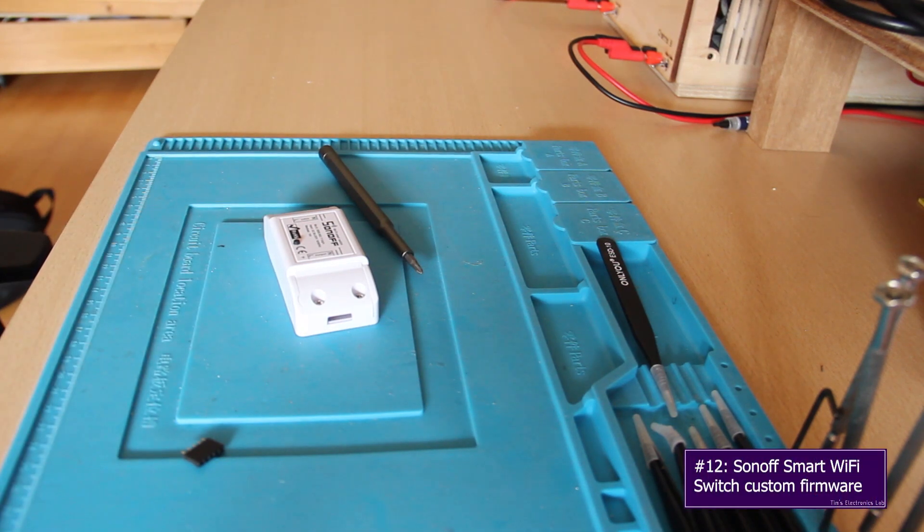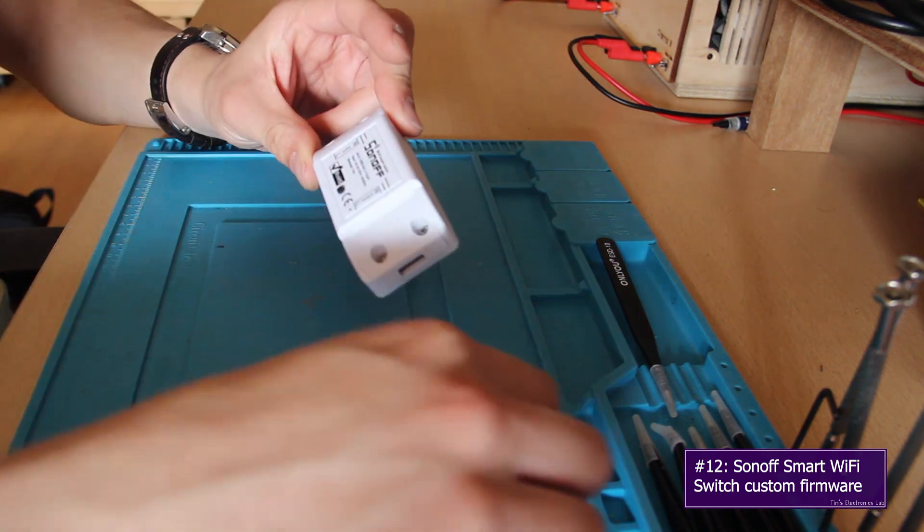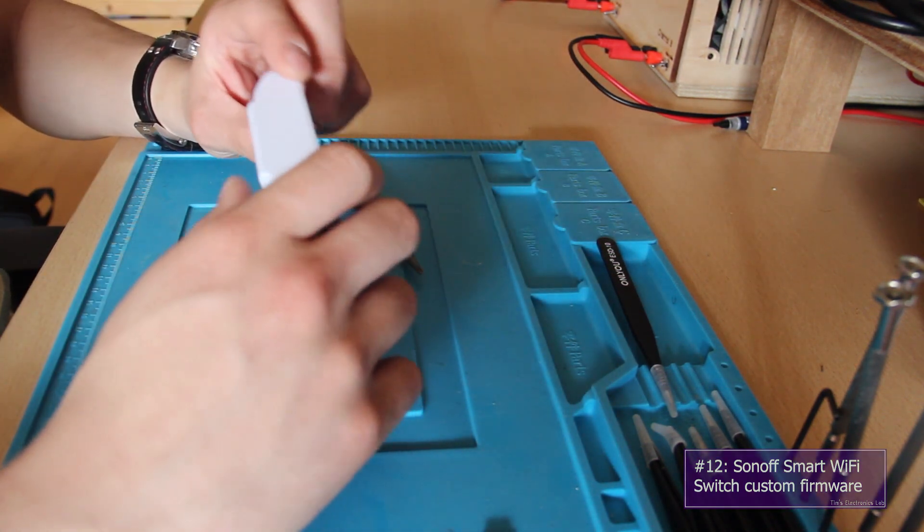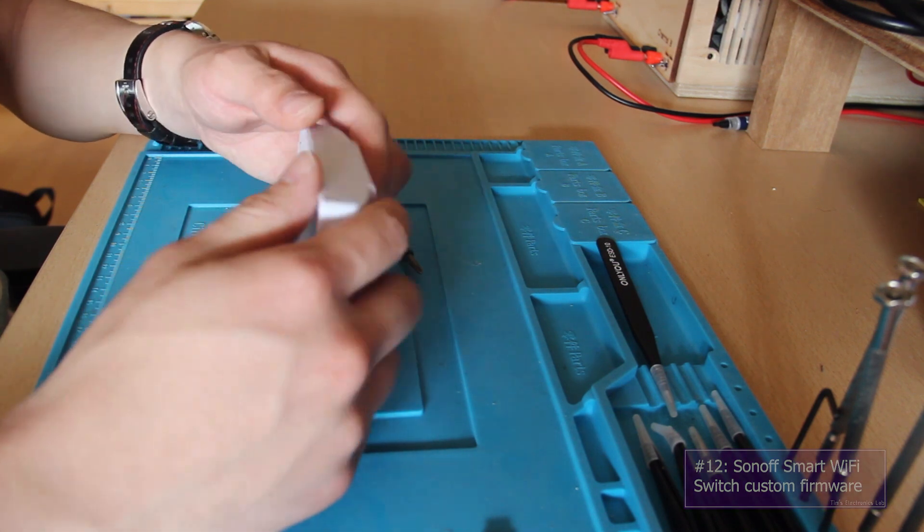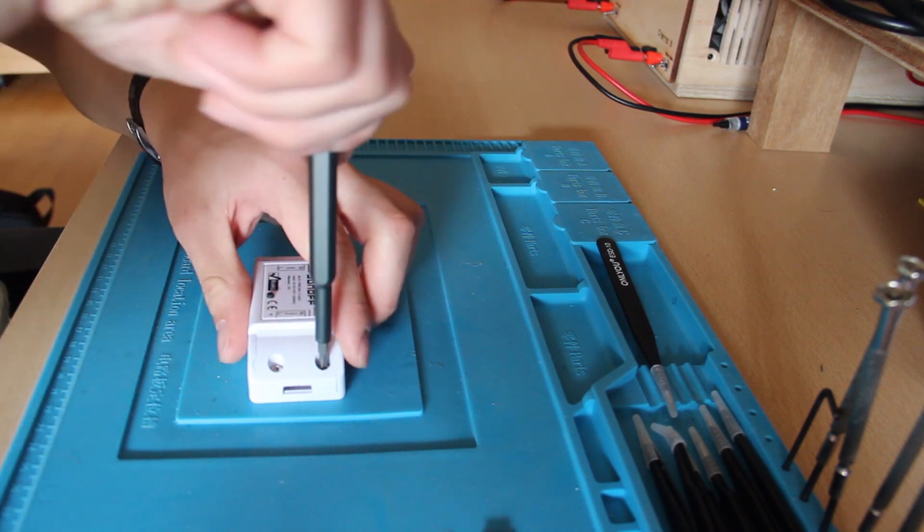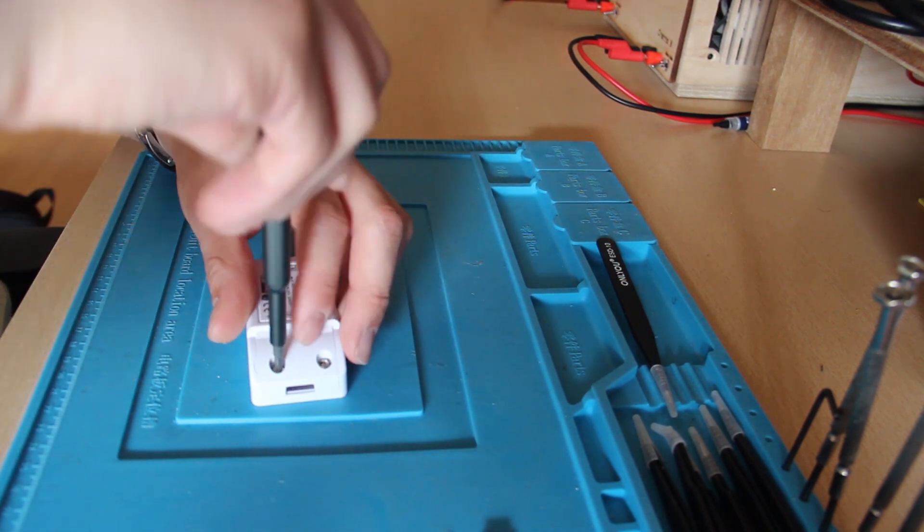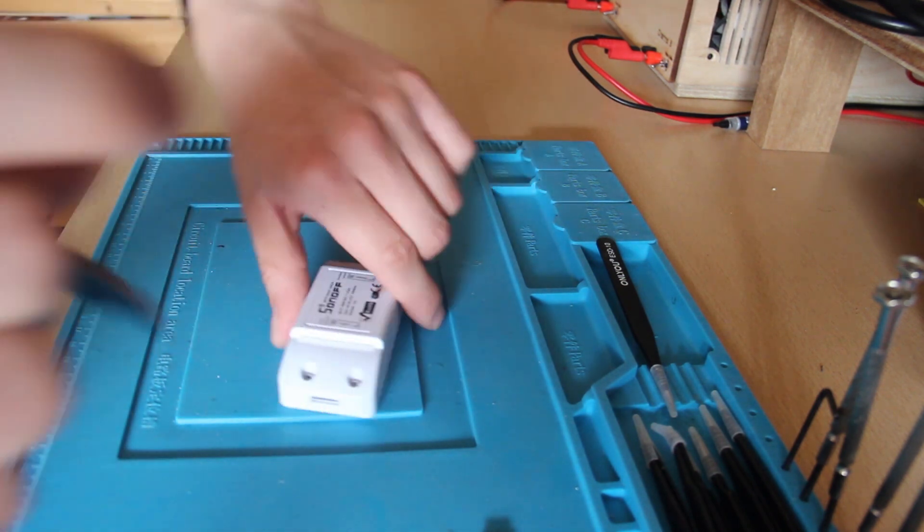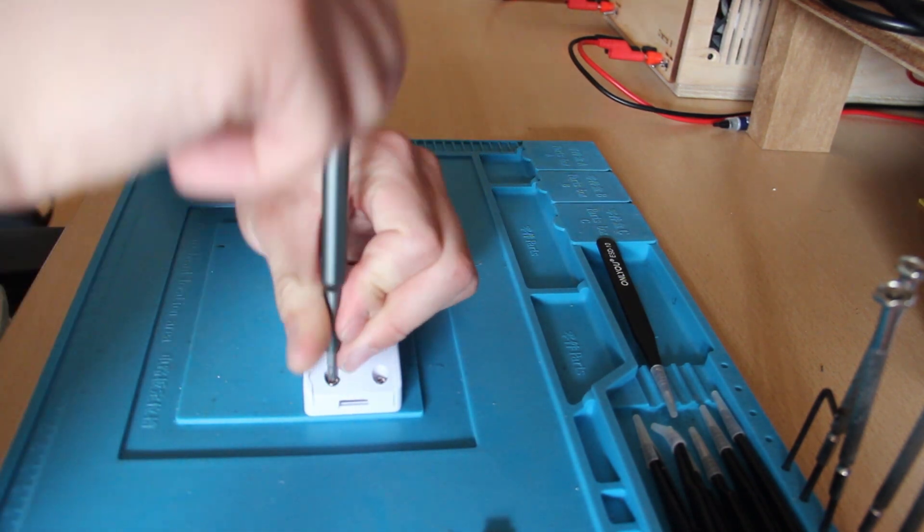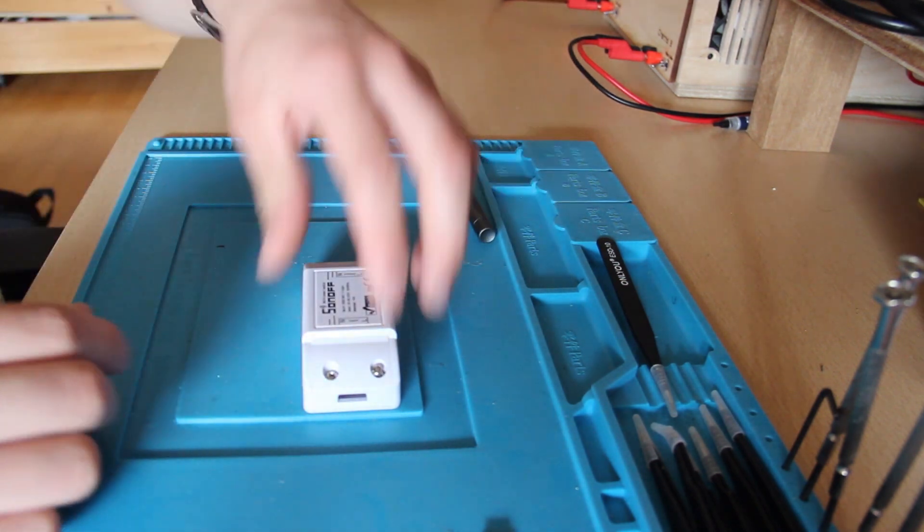Hi guys, welcome back to Tim's Electronics Lab. Today I'm going to show you how to reflash this Sonoff smart WiFi switch. We first start by taking it apart, and to do that you need to loosen those four screws that are holding the wire holder plates together with the unit.